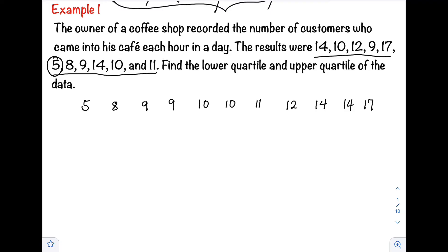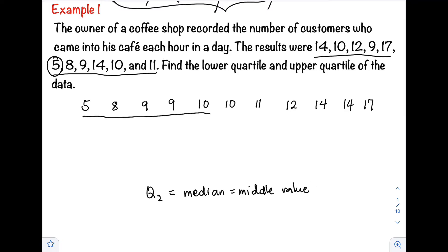After rearranging the results, we can now locate our second quartile. Our second quartile is the same as our median — that is the middle value of our distribution. If we divide the distribution into two equal parts, we have five values from the left and five values from the right, meaning our middle value is equal to 10. So that is our second quartile.